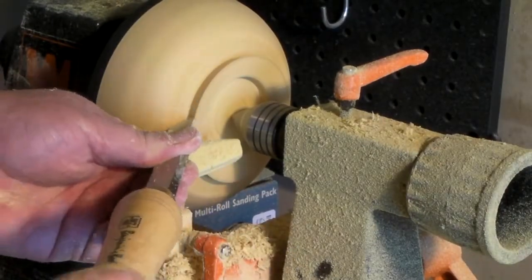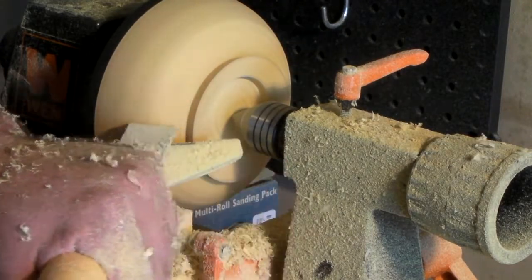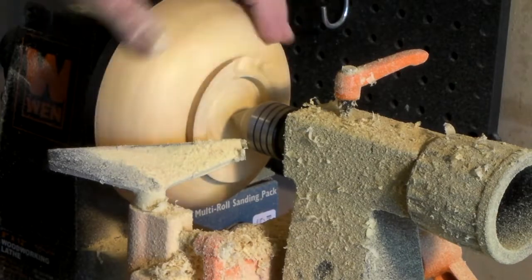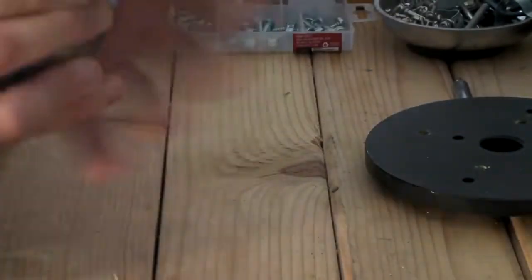So I'm using that fine scraper once again to really just work on that edge. This would also be where it would be handy to have a curved rest. That tool rest that I have there is straight, and something that would curve and follow the natural curve of that bowl would be a lot better.